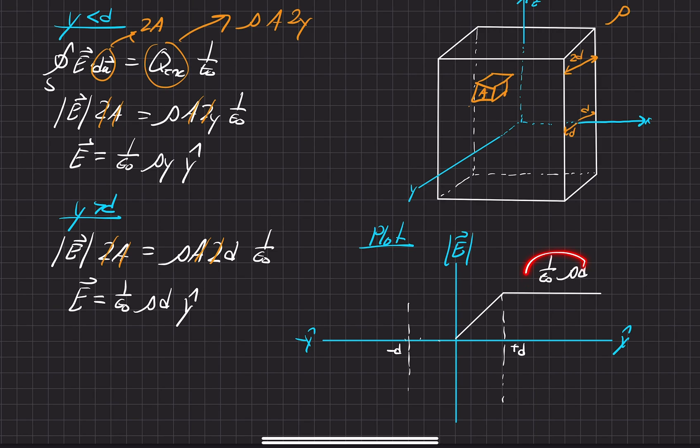That's the constant value where it sees the infinite wall. And then this one right here, that's the value that we had right here, which is 1 over epsilon naught, rho times y. And that's a linear value right here.